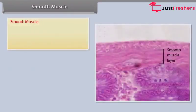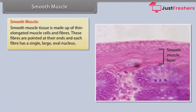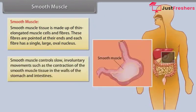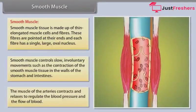Smooth muscle tissue is made up of thin, elongated muscle cells and fibers. These fibers are pointed at their ends, and each fiber has a single, large, oval nucleus. Smooth muscle controls slow, involuntary movements, such as the contraction of smooth muscle tissue in the walls of the stomach and intestines. The muscles of the arteries contract and relax to regulate blood pressure and the flow of blood.